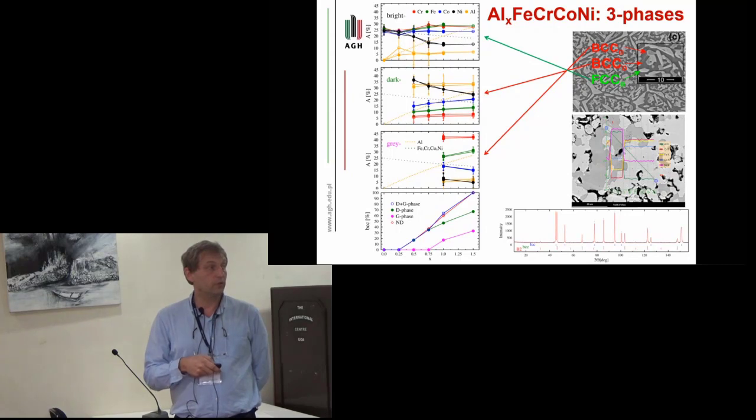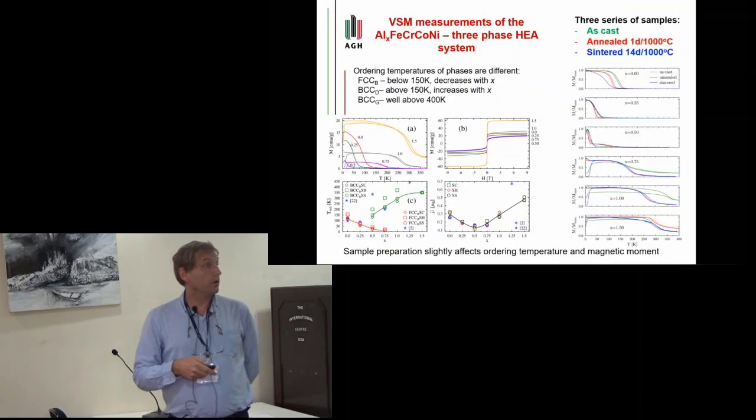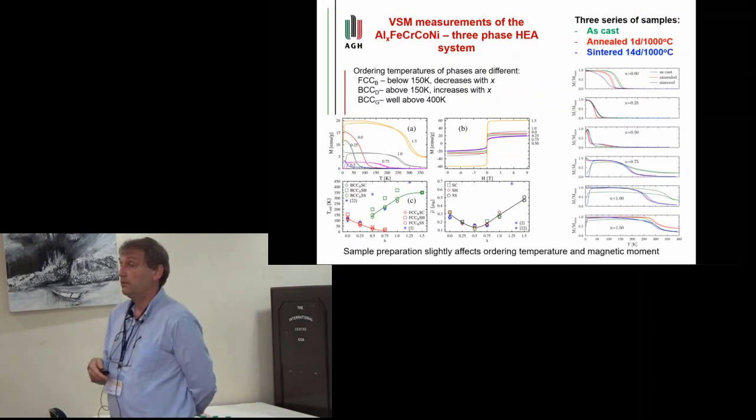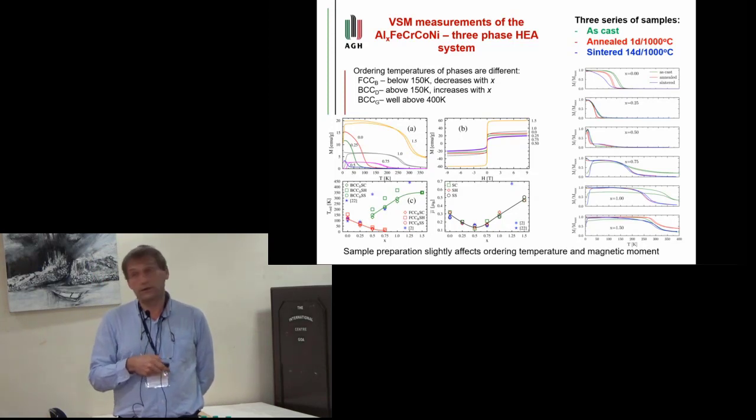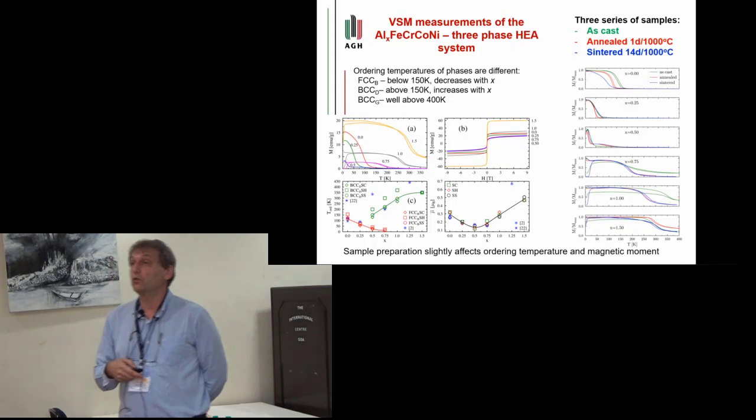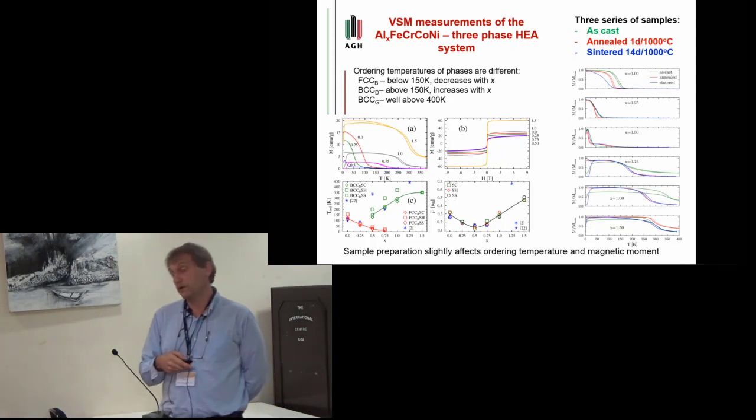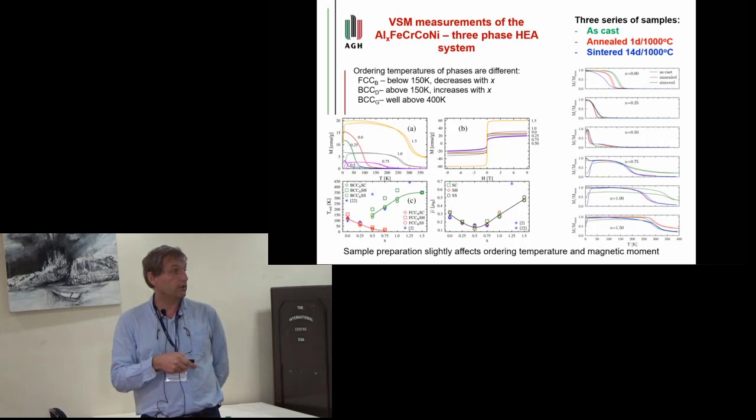We have also performed magnetic measurements on several series of samples in this range of aluminum content, and we have confirmed that the samples are multi-phased. Each phase has different magnetic properties, different ordering temperatures. For example, you can see it on this curve that there are several ordering temperatures present.